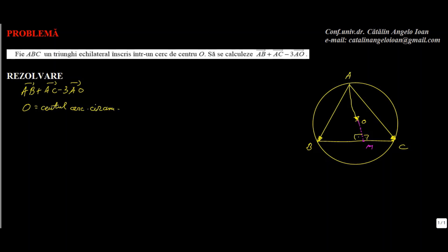Ce înseamnă acest lucru? Că centrul de greutate se găsește pe mediană la două treimi de vârf și o treime de bază. Prin urmare, acest vectorul AO este două treimi din vectorul AM. O să-i punem aici AM în continuare. Pe de altă parte, atenție, haideți să considerăm vectorul BM ce se întâmplă?